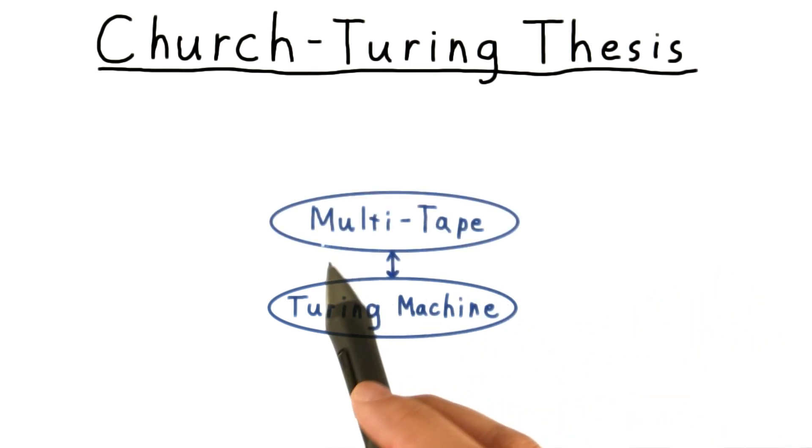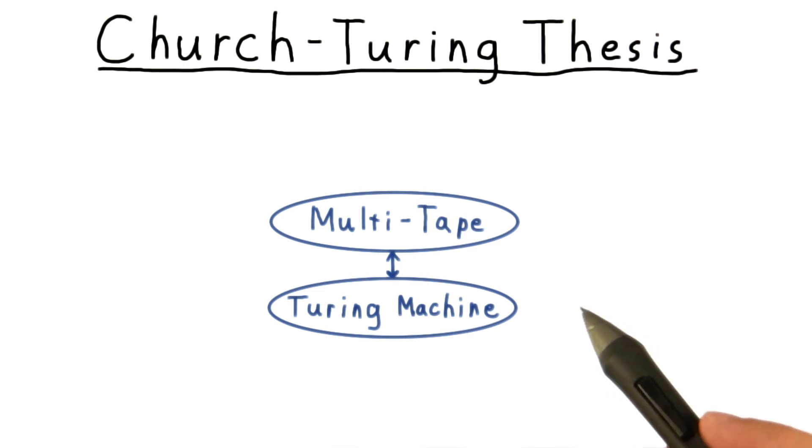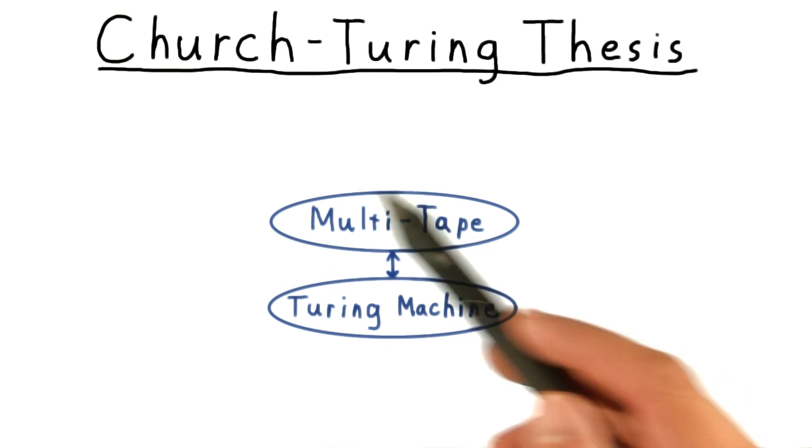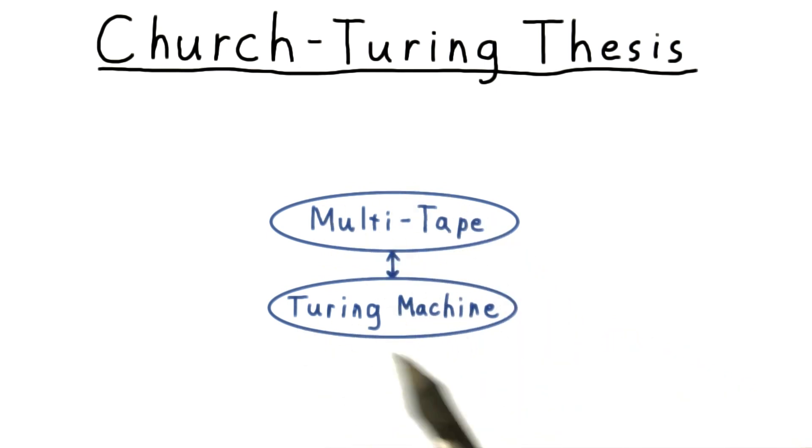We'll begin by looking at multi-tape Turing machines, which in many cases are much easier to work with. And we'll show that anything a multi-tape Turing machine can do, a regular Turing machine can do too.